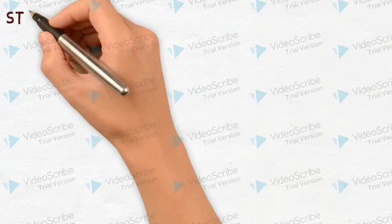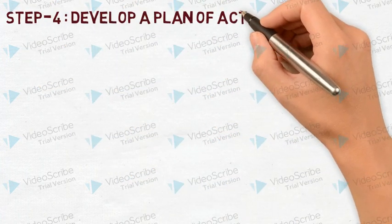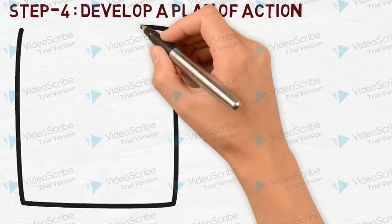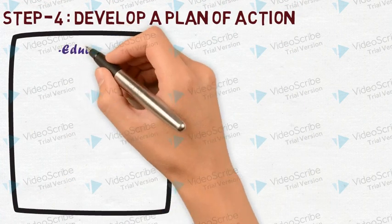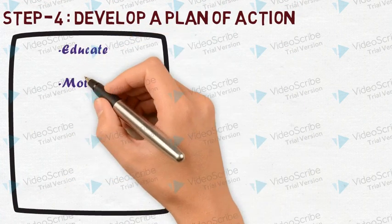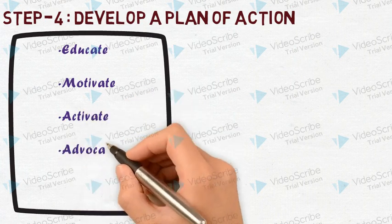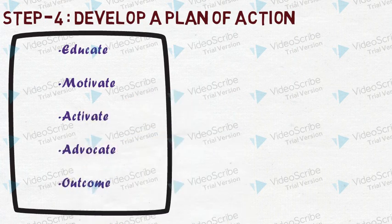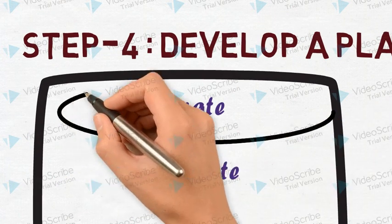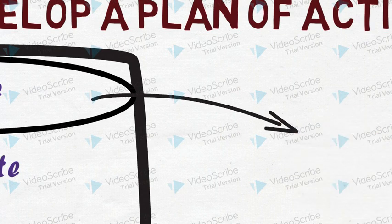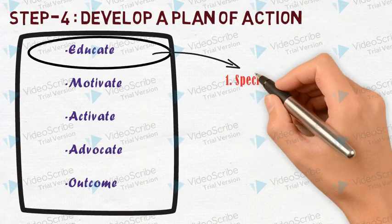In step 4, for developing a plan of action, we defined all of our actions in five steps: educate, motivate, activate, advocate, and outcomes. We also identified specific actions for every step, including specific tasks, participants, time duration, materials, and cost.